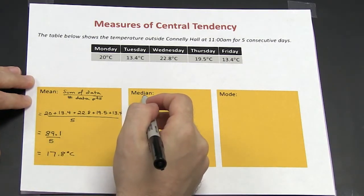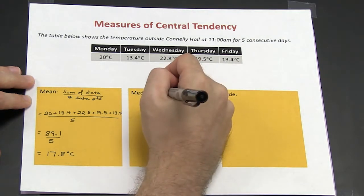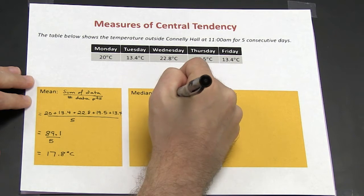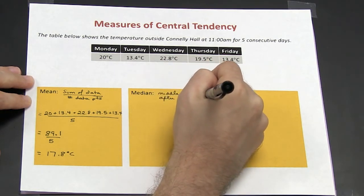To calculate the median, recall that the median is the middle number after arranging it from lowest to highest.